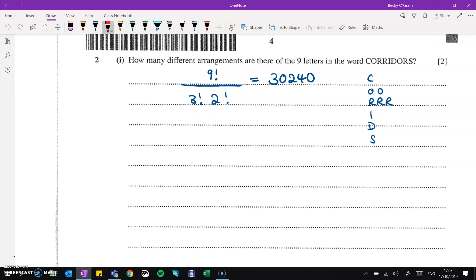Question two. How many different arrangements of the letters in corridors? So we have two C's, two O's and three R's as repeats. Nine letters all together divided by the repeats comes to 30,240.